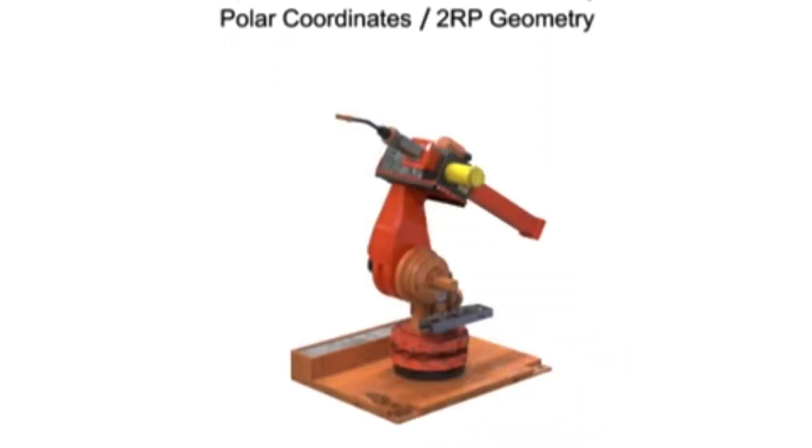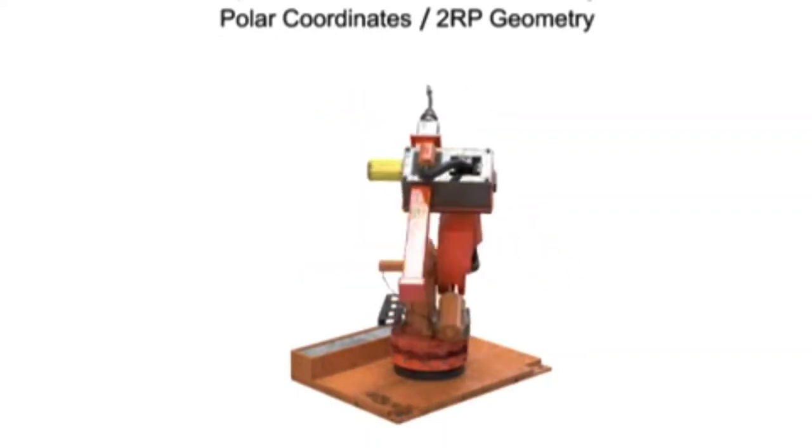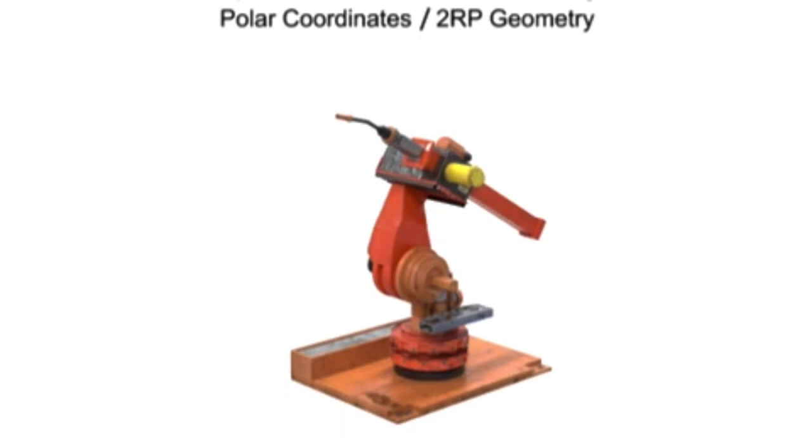Robotic arms with spherical geometry have rotational movement in two directions: rotational movement at the base and rotational movement at the shoulder. Spherical arm geometry robots also have linear motion in one direction, typically the reach of the arm.